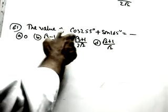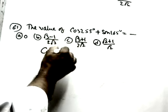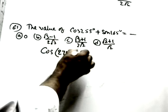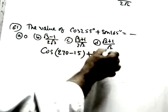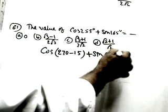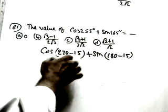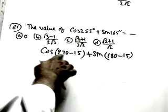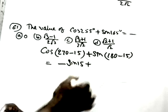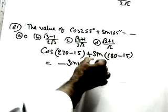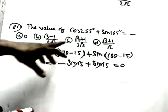Let me do one or two questions based on these formulas. The question is cos 255°. We write it as cos(270°−15°). Cos(270°−θ) is −sin θ, so this is −sin 15°. And sin 165° = sin(180°−15°) = sin 15°. So −sin 15° + sin 15° cancels, giving the value 0.